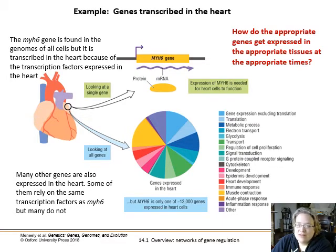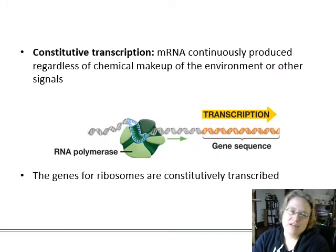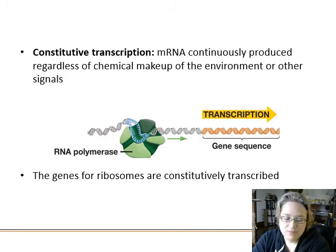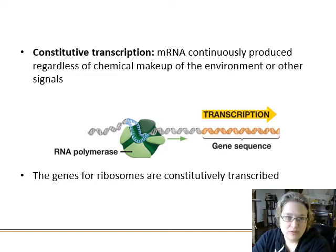How do appropriate genes get expressed in tissues at the right time? That question alone could be an entire PhD — it gets complicated fast. Some genes are not really regulated much; they're called housekeeping genes, or constitutive transcription, where you continually produce messenger RNA regardless of conditions. An example is ribosomes — every cell always needs a huge number of ribosomes, so you just keep transcribing them.